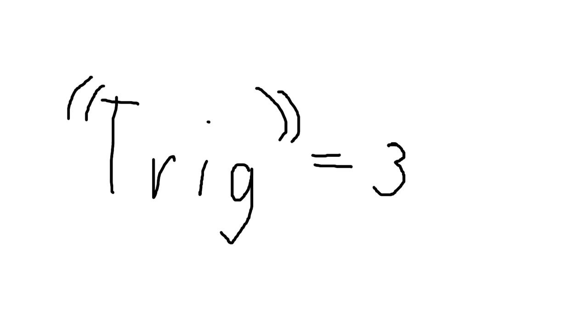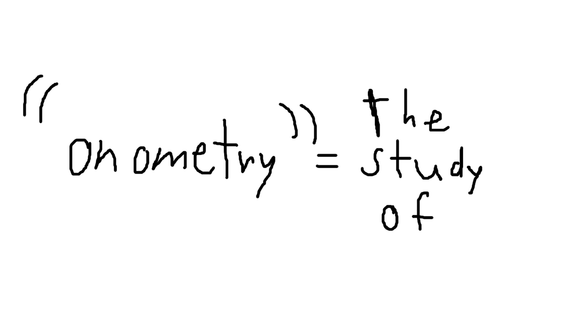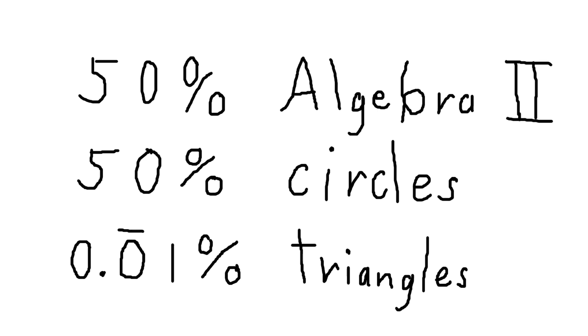Trigonometry is Algebra 3, trig meaning 3, and onometry meaning the study of. So how do we best learn about the number 3? Well, it takes half a year of relearning Algebra 2, half a year of learning about the unit circle, and four seconds looking at triangles. Makes you wonder why they call it trigonometry.